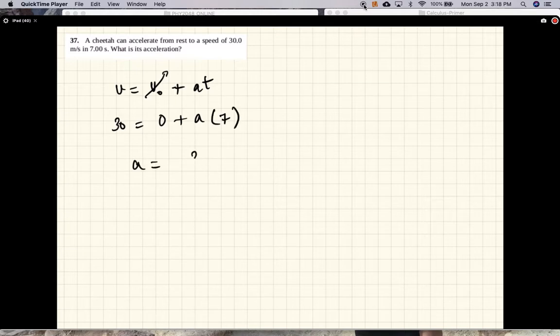So acceleration is 30 meters per second divided by 7 seconds, which is 4.29 meters per second squared.